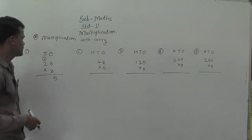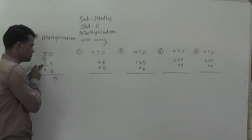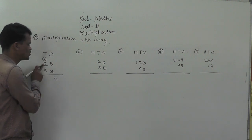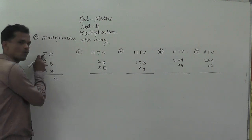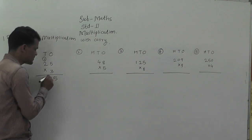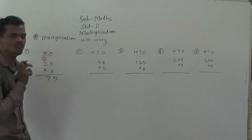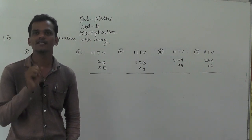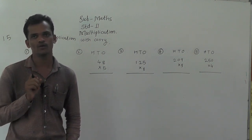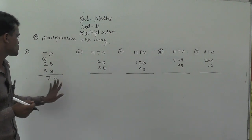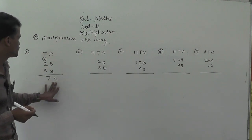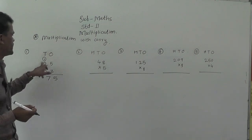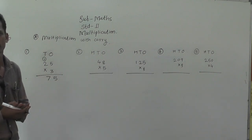Then multiply the tens place digit 2 by 3. 3 times 2 is 6, plus 1 carry equals 7. So the answer is 75, and the multiplication answer is called the product. 75 is the product of 25 and 3.